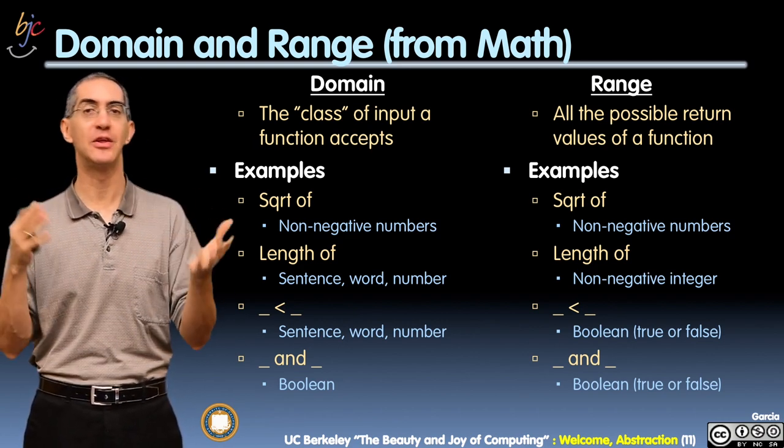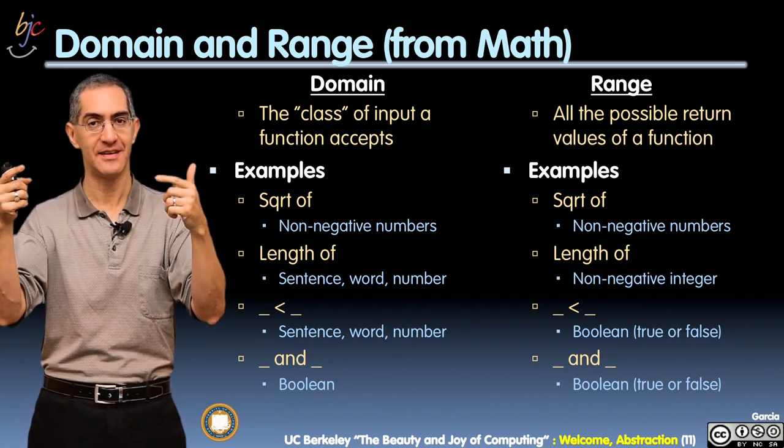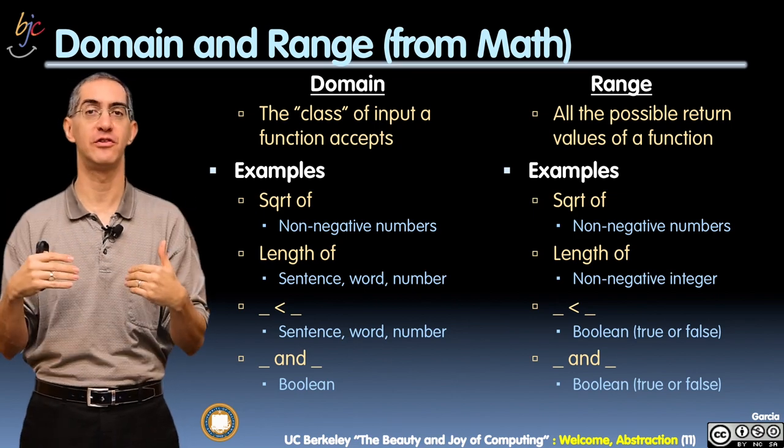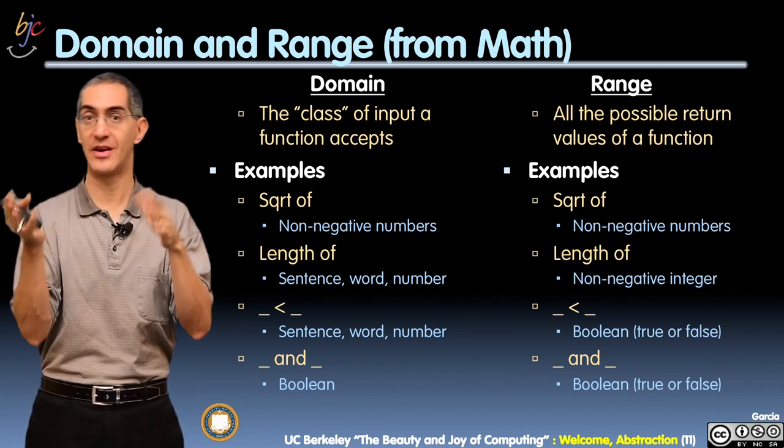And finally, AND. AND is a really cool Boolean function. It takes in trues and falses, a left true and false and a right true and false, and returns true or false also. It returns a Boolean, so the domain and range are the same.